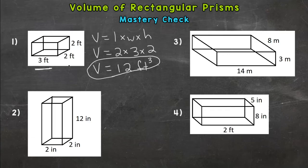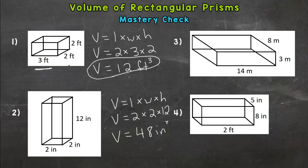Let's move on to number two. Volume equals length times width times height. Plug in 2 times 2 times 12, and we end up with 48 cubic inches.